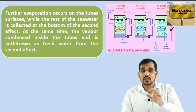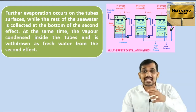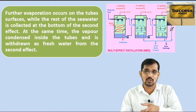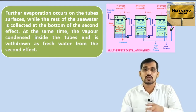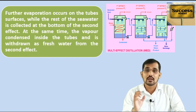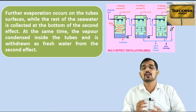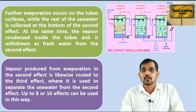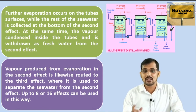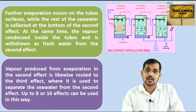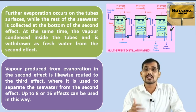This principle applies in every effect — from each effect we collect water vapour and transfer it to the next effect as the heat source, while the remaining sea water acts as feed to the next effect and condensate is collected as fresh water. The vapour produced in the second effect is likewise routed to the third effect. Eight to sixteen effects can be used to increase the efficiency of the separation.